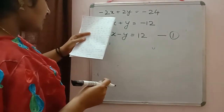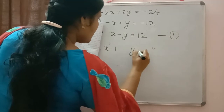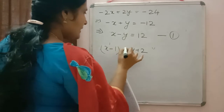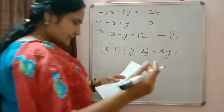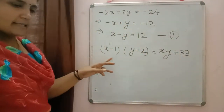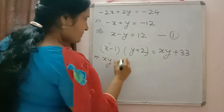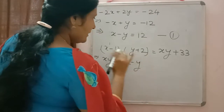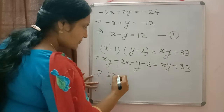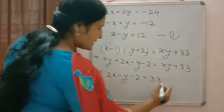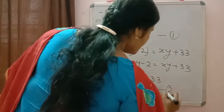For the second equation, if the length is reduced by 1 unit (x-1) and breadth is increased by 2 units (y+2), the original area increases by 33 square units. So (x-1)(y+2) = xy + 33. Simplifying: xy + 2x - y - 2 = xy + 33. Cancelling xy and shifting gives us equation 2: 2x - y = 35.